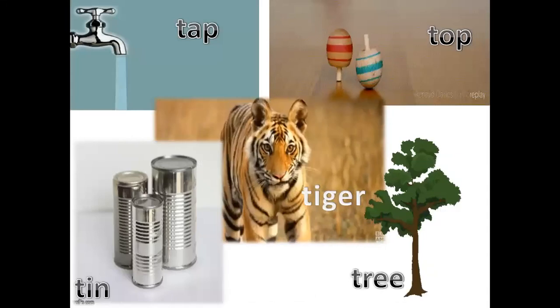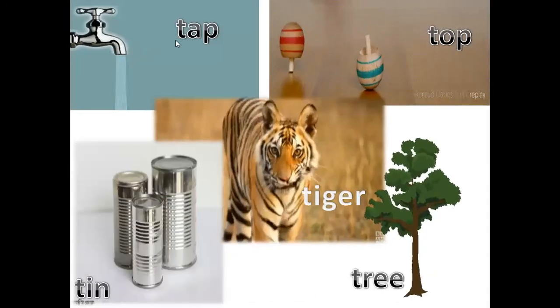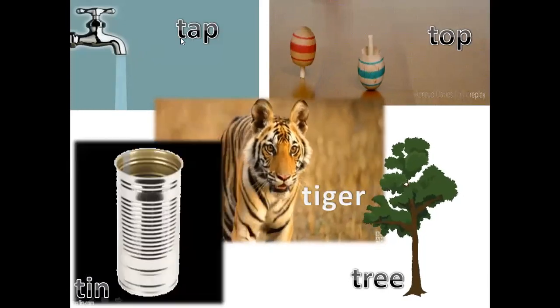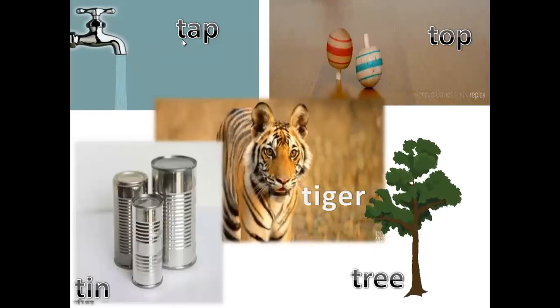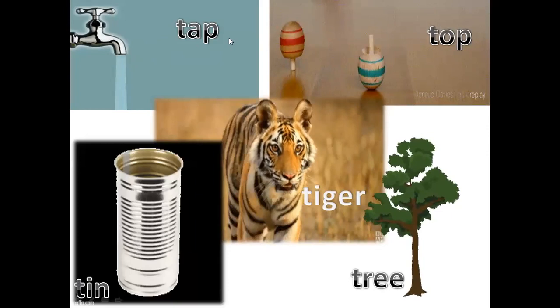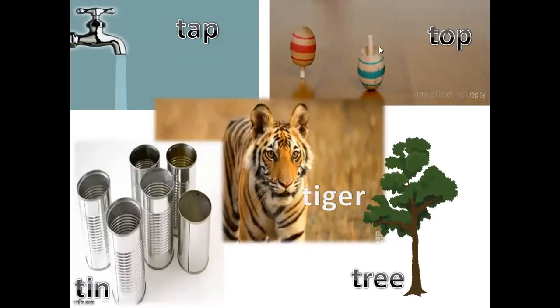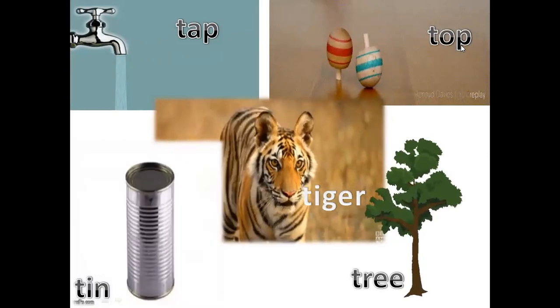So let's learn a few words with the letter T. So here you can see this is the first letter, the beginning letter of the word. What do you see in the picture? Tap. T, T, tap. Here what do you see? Tops. T, T, top.